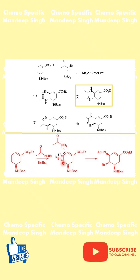The amine group, which is the acetamide, then attacks in an SN2 fashion, which leads to the formation of this particular product — option number two in our case. This is a very interesting and important problem from an exam's point of view.